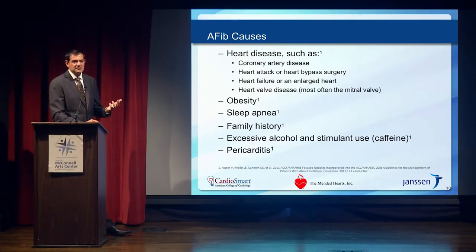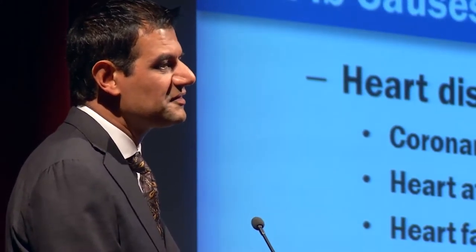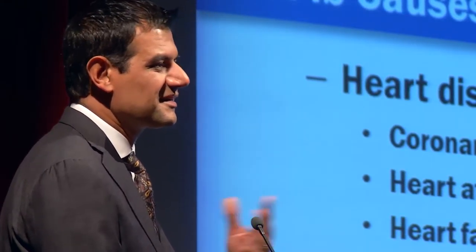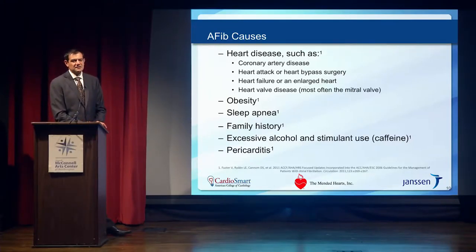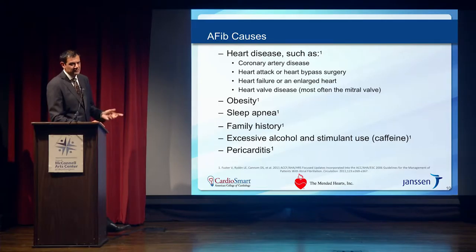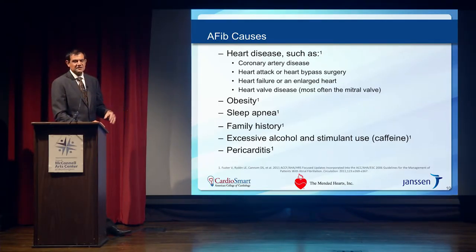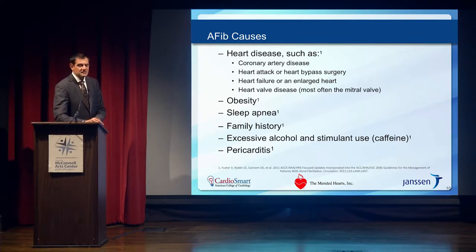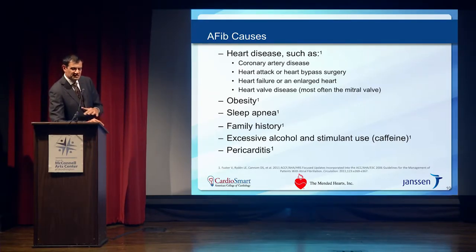Someone can also have a heart attack — a myocardial infarction — and after that, because the heart is weak, there can be strain on the electrical system leading to the same condition. When we diagnose atrial fib on an EKG, we have to look for these other conditions, because sometimes the best way to treat the atrial fib is to treat whatever is causing it. If you have AFib, there's a good chance you may also have high blood pressure, and treating that properly can be the best way to prevent the AFib from getting worse.